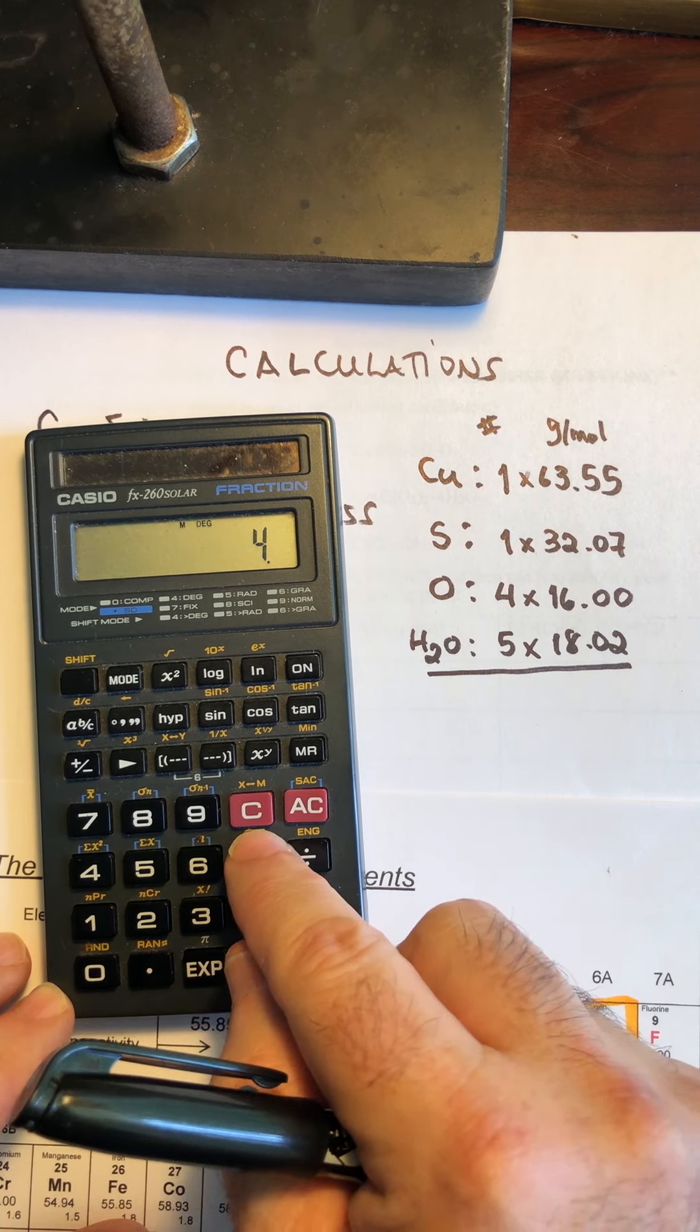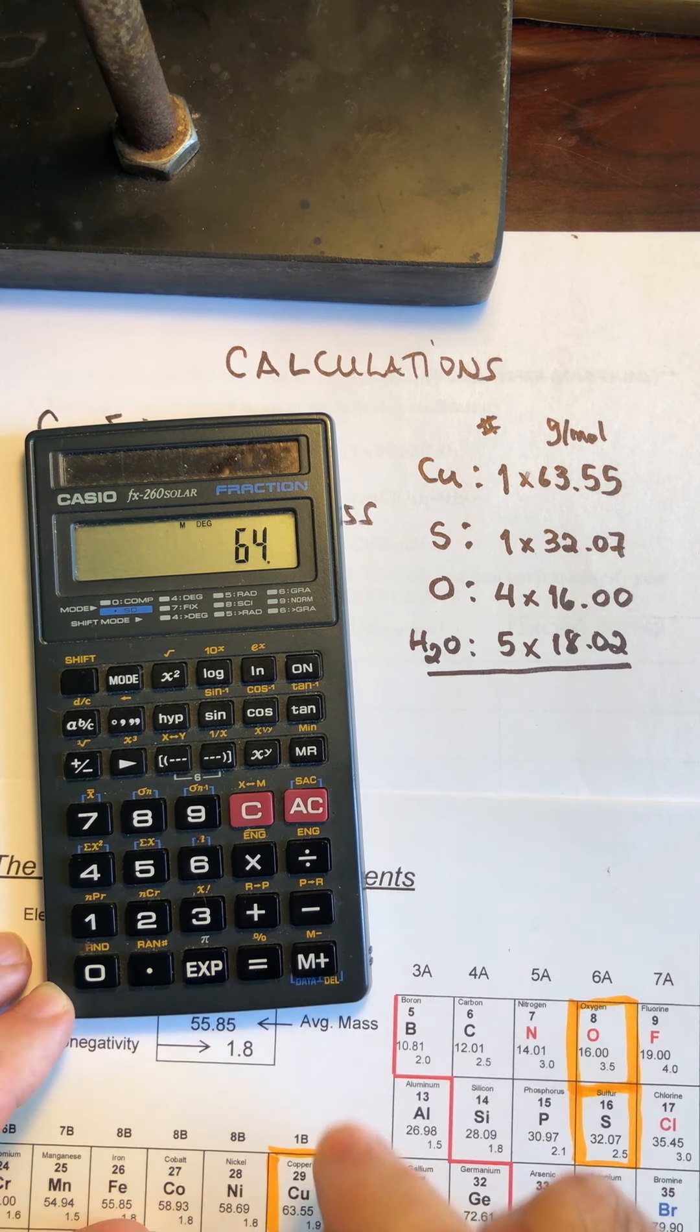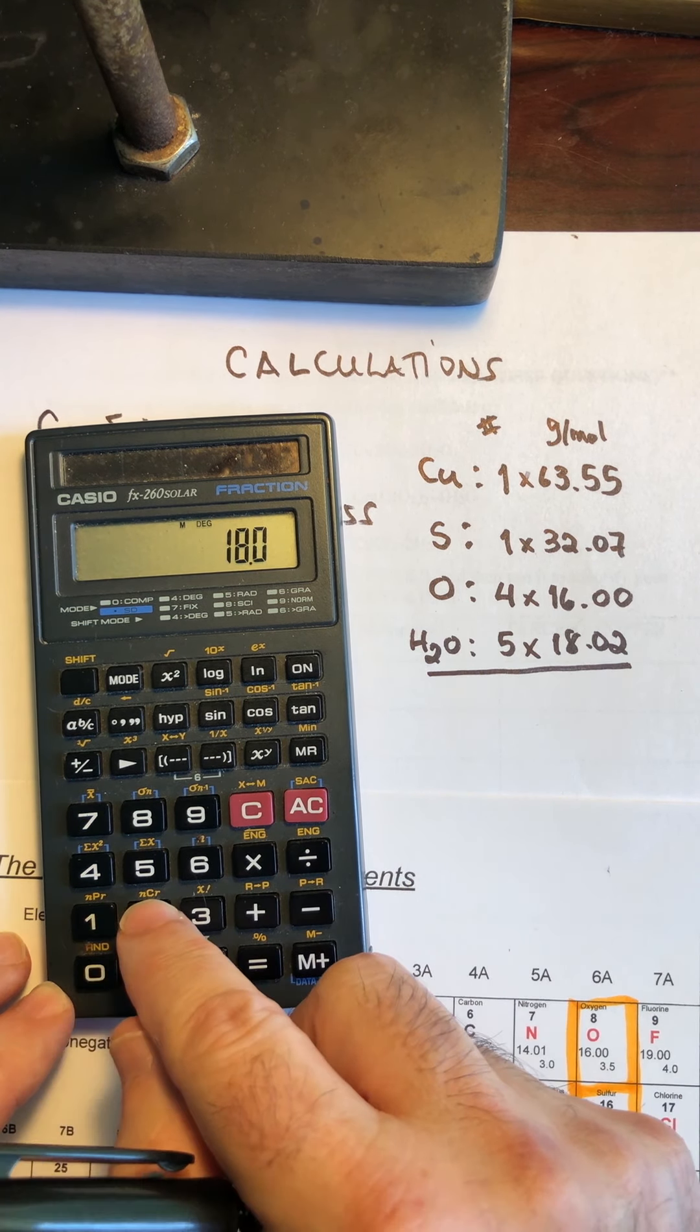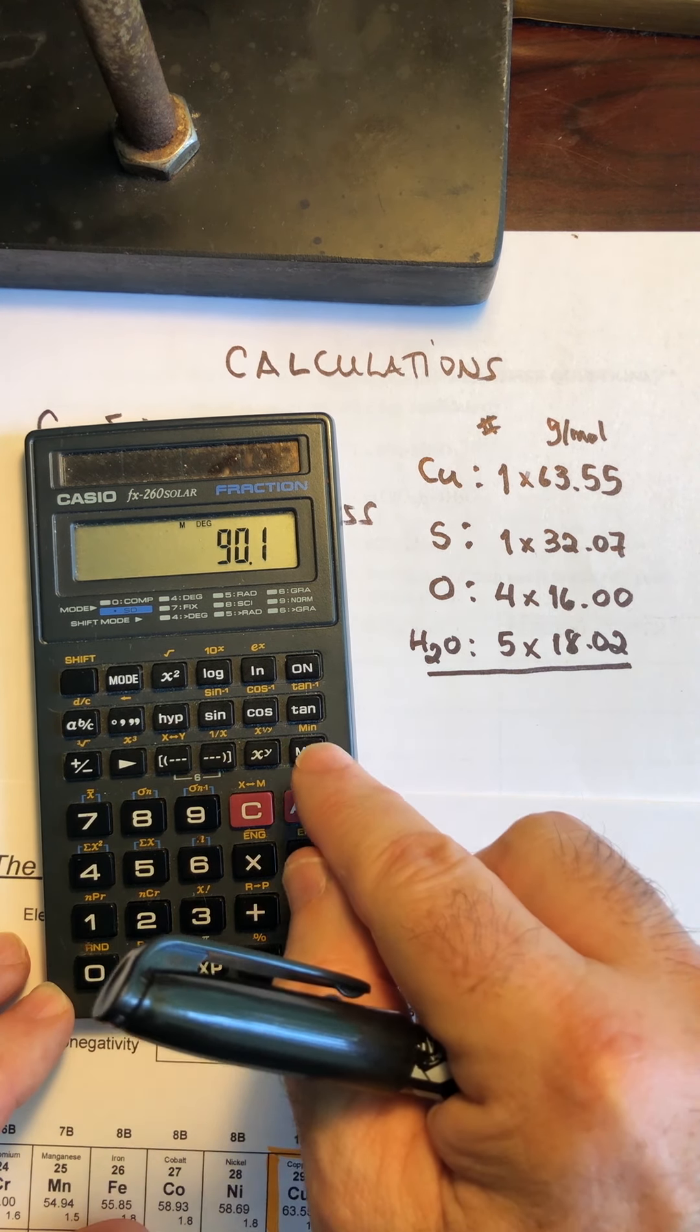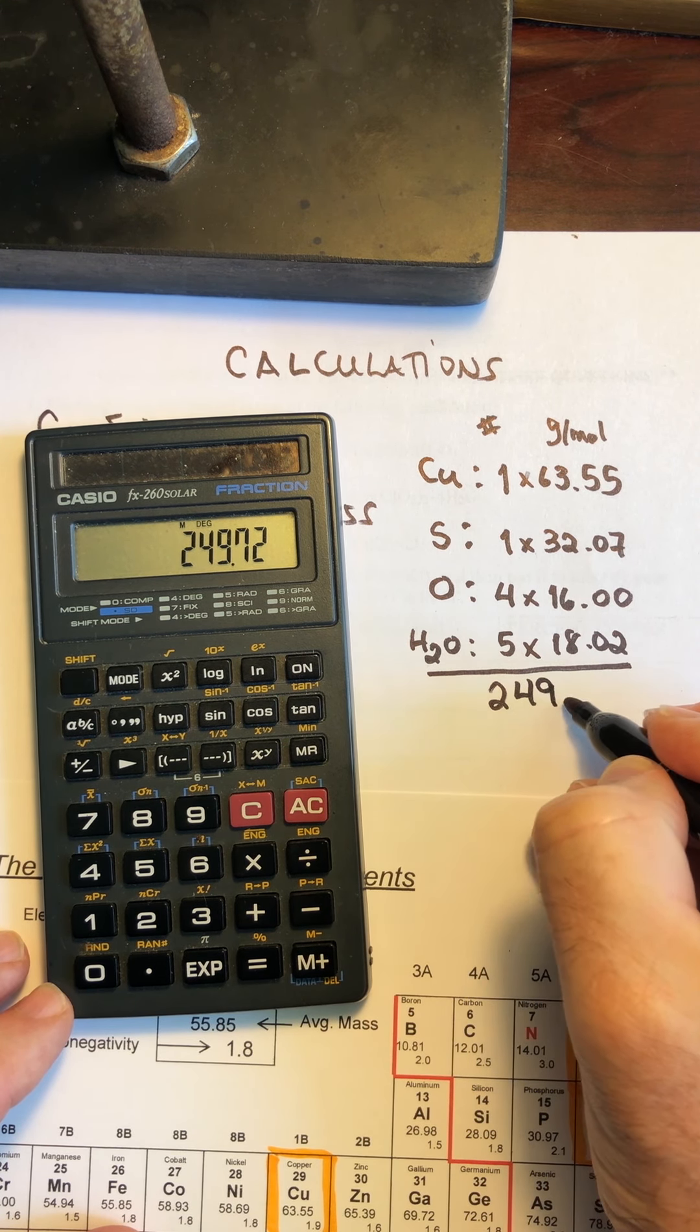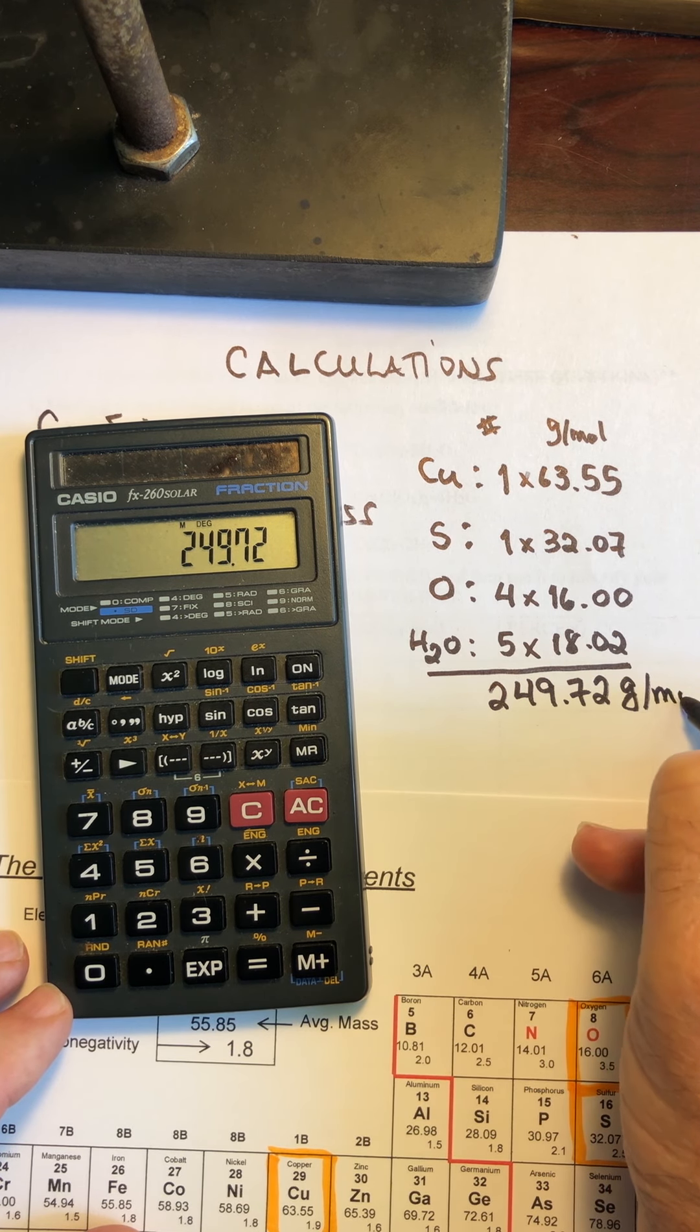I have four oxygens at 16 each. And I put that in my memory. And then I have five water molecules at 18.02 each. And I'm going to put that in my memory. And so when I do my memory recall, I get a total of 249.72 grams per mole.